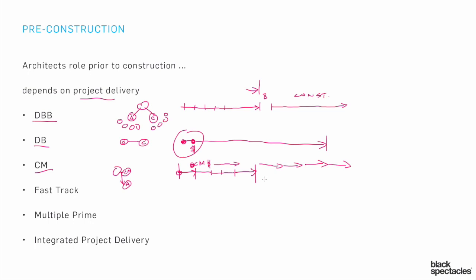Other delivery methods — Fast Track, Multiple Prime, Integrated Project Delivery — each impact the architect's role in their own ways. In all of them, the core role is to help make sure the project gets built correctly and to keep everybody informed. The specific tasks like RFIs and field communications remain the same regardless of delivery method, but how they play out contractually and who receives that information will change for each project delivery system.